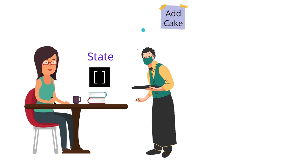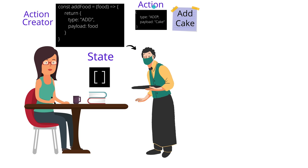In Redux terms, this is analogous to action creators and actions. If we ever want to update our state, we create an action, and to create an action we use an action creator. An action creator is simply a function that returns an action object. The action object typically has a 'type' property — what we want to do, like 'add' — and a 'payload' — what we want to do it with, like 'cake'. The action creator is just a function that takes food and returns that action object.